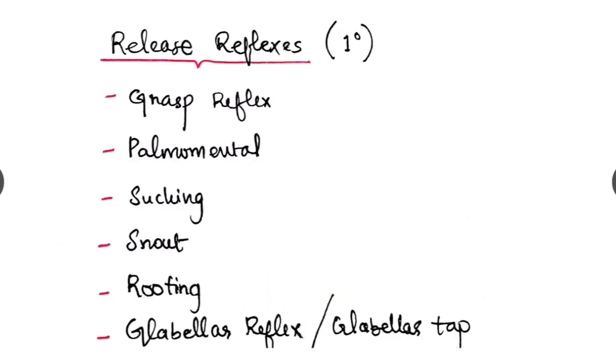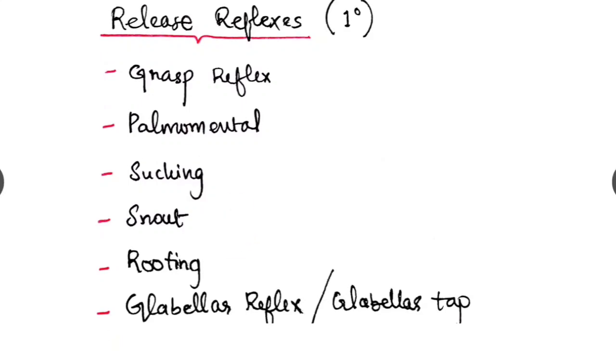Regarding the released reflexes which are primitive reflexes seen in neonates which are released or seen in elderly people in some kind of brain lesions. They are grasp reflex, palmomental reflex, sucking reflex, snouting, rooting, glabellar reflex or glabellar tap seen in Parkinson's disease.